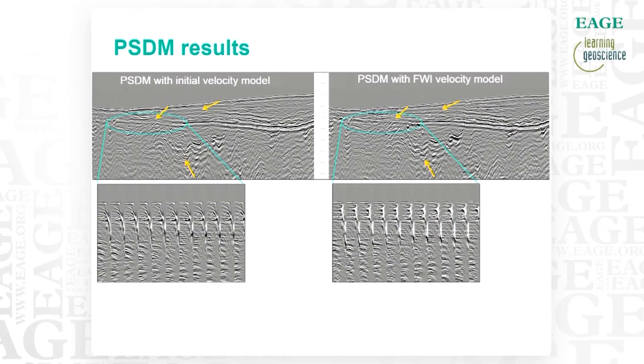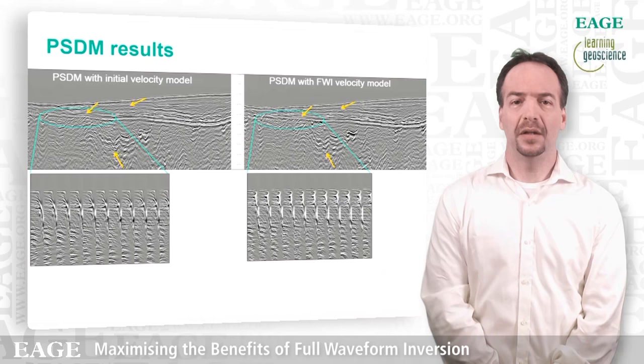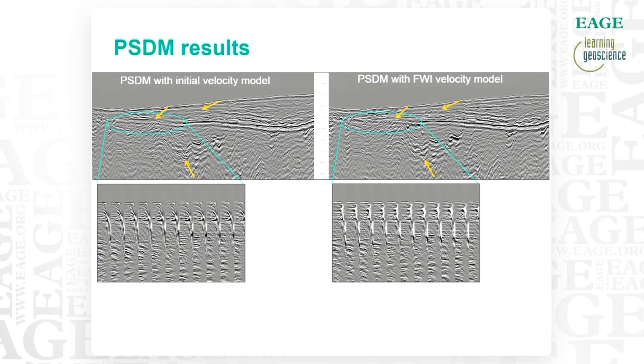When we migrate with this velocity you can see the improvement. On the left we have the PSDM with the initial velocity model, on the right the result with the new velocity model. With the orange arrows I try to point to some of the major improvements. When you look at the gather extracted from the blue-green ellipse you can see how the flatness has dramatically improved. That is a testimony that FWI is doing what it is supposed to be doing and is accurately recovering the velocity.